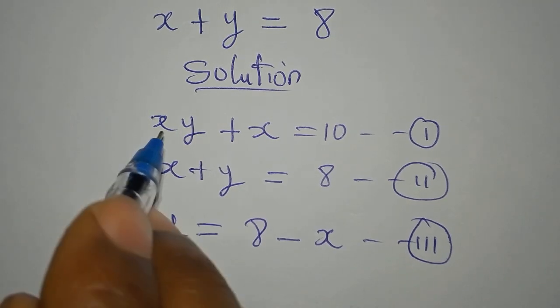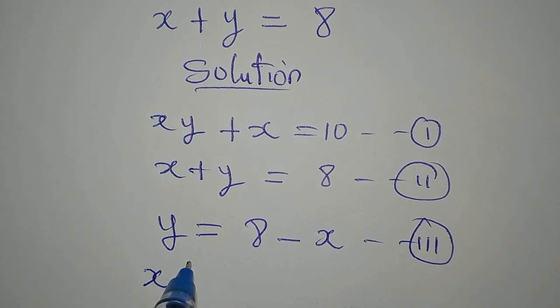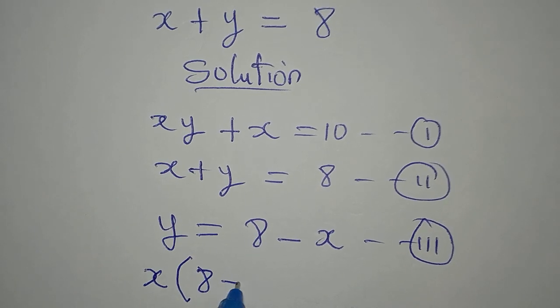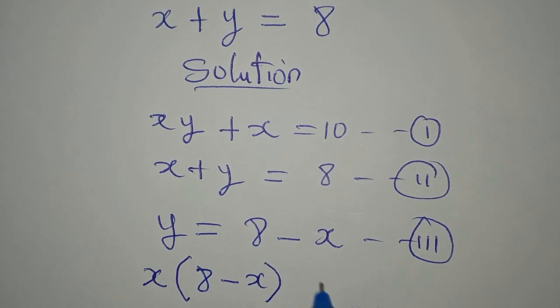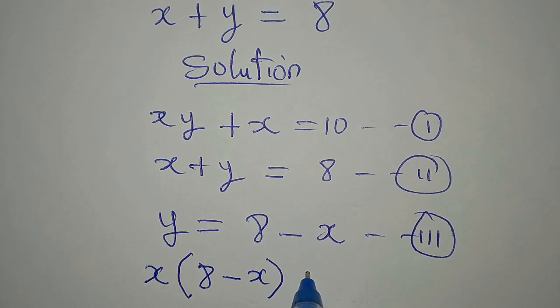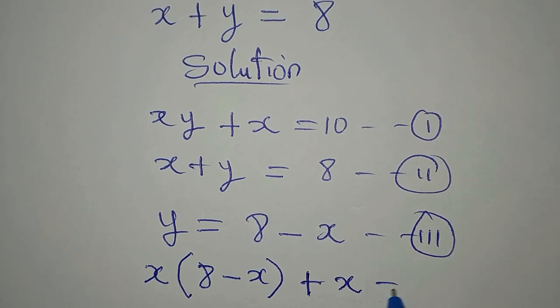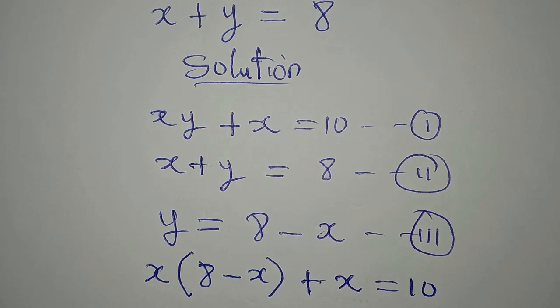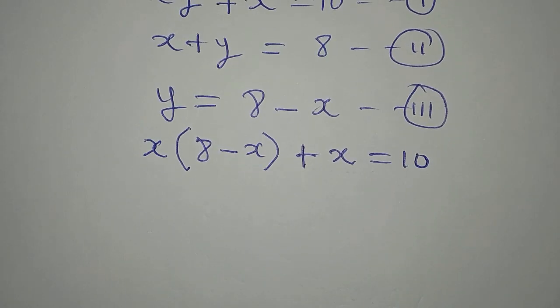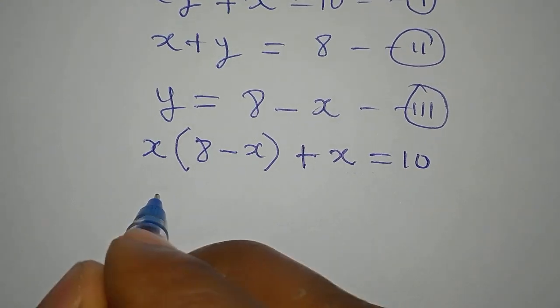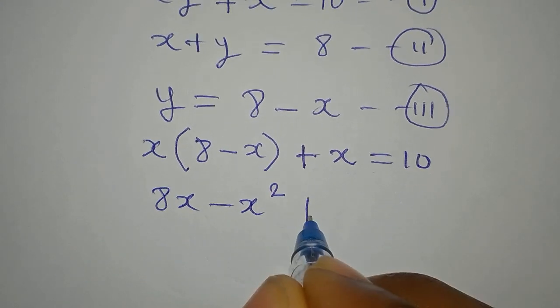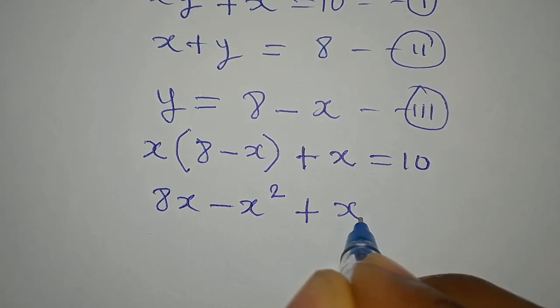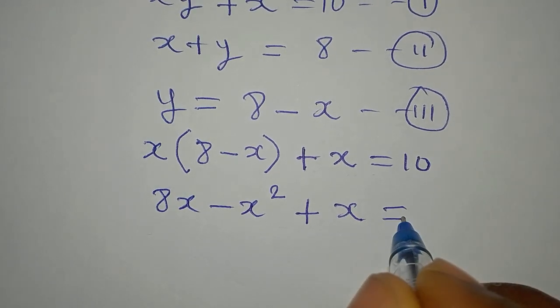So equation 1 is xy. So it's going to be x into 8 minus x, because our y is 8 minus x. Then plus x equals 10. We open the brackets.